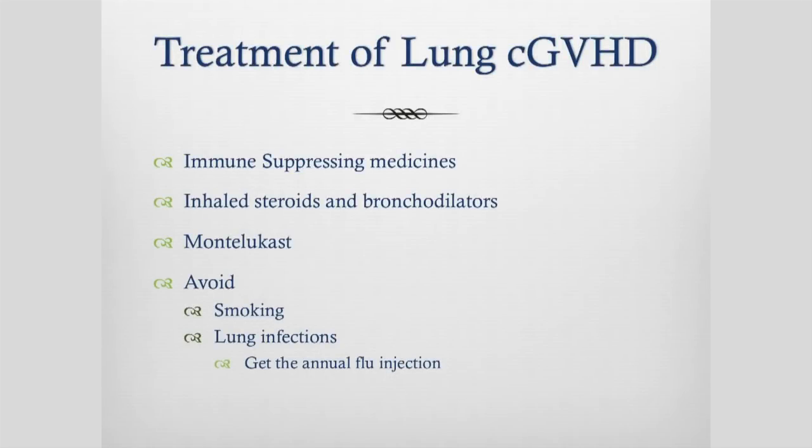Immune-suppressing medicines are used to treat lung GVHD. We can use inhaled steroids to help treat that, and bronchodilators to help dilate the airways. We can also use the anti-allergic medicine montelukast to help as well. What you can do is avoid smoking — it makes sense if your lungs are compromised. Try to avoid getting lung infections, because infection on already damaged lungs can make things worse. A good way to help prevent that is to get the annual flu injection, because a secondary pneumonia after catching the flu is really not going to help.